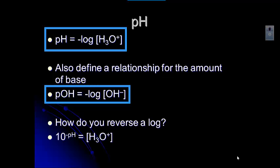So let's look at how you reverse a log. A log is logarithmic with a base 10. So what we're saying is 10 to that negative pH gives us that hydronium ion concentration, and 10 to the negative pOH gives us the OH minus, or hydroxide ion concentration. To use that in your calculator, you just use the second log keys.